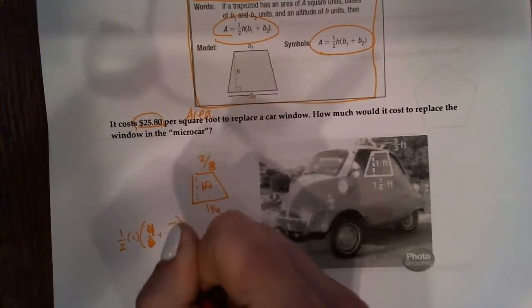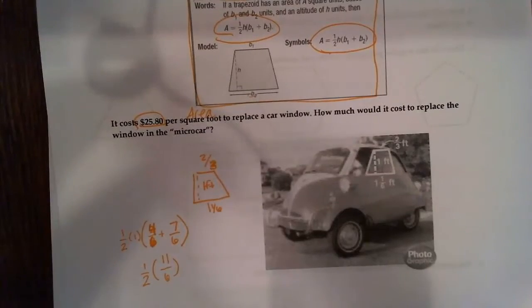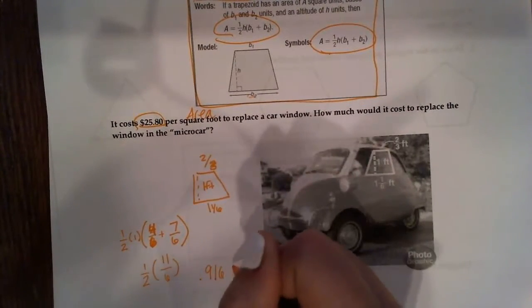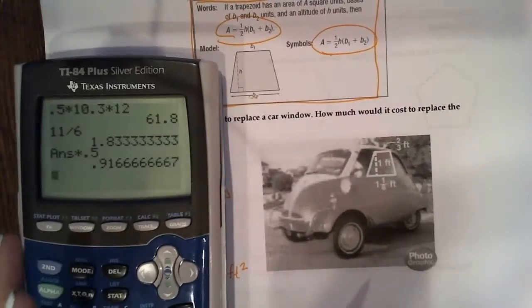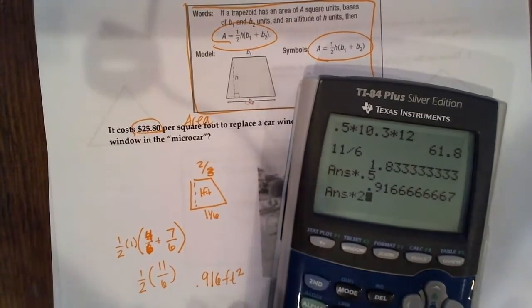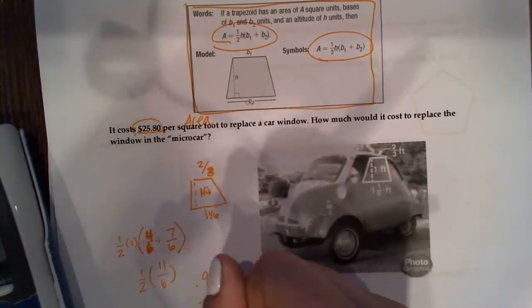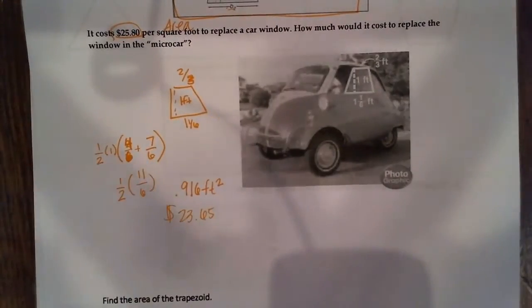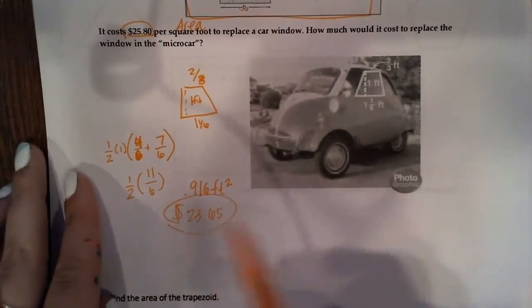Half of one is just a half. I'm going to put this in my calculator and I get 0.916 feet squared. And I'm going to multiply my answer I got in my calculator by the price, $25.80, and I'm going to get $23.65. If someone else wants to try this problem and thinks I'm wrong, it could be possible. You let me know. I cannot figure out how to do fractions on this calculator. That's what I got. Well, this is a mini micro car, so this would be very, very small.